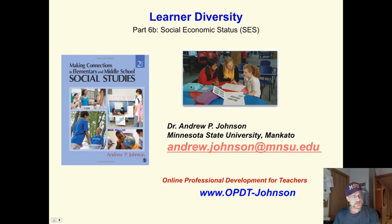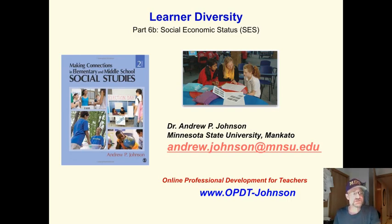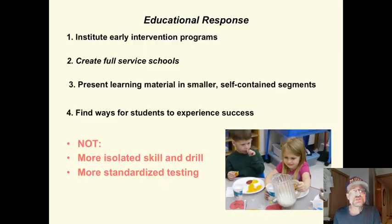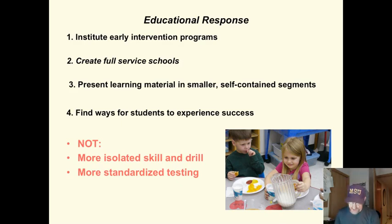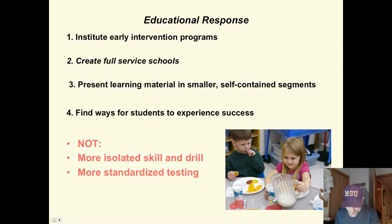This is part 6B, talking about learning diversity and socioeconomic status. In a previous video, we were looking at some of the data and statistics related to poverty and its effect on children's ability to learn. We were running out of time, so I stopped that, and I'm going to finish the end portion here, looking at the educational response. There's little a school or classroom can do to negate the effects of poverty, but there are four strategies that can be used to reduce these effects.